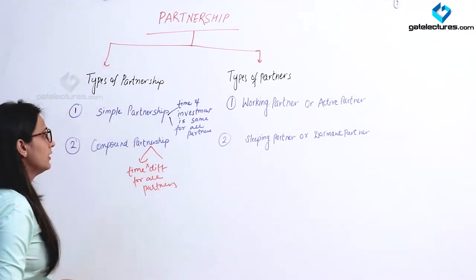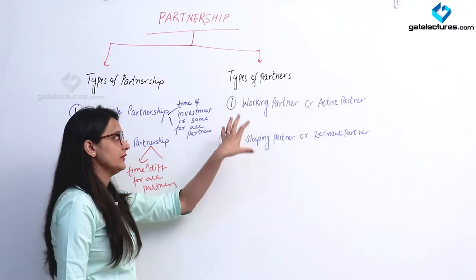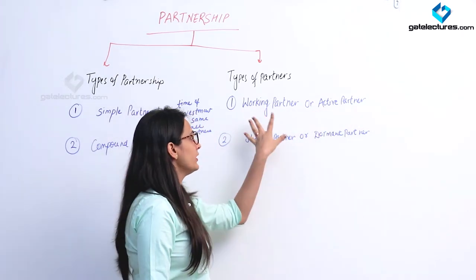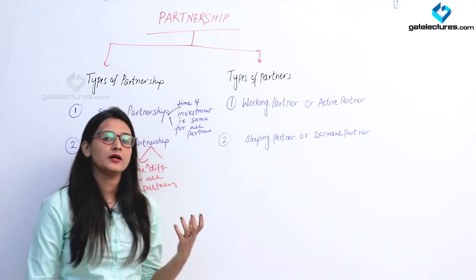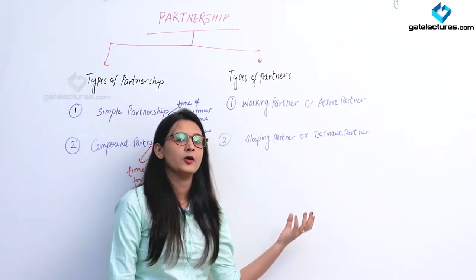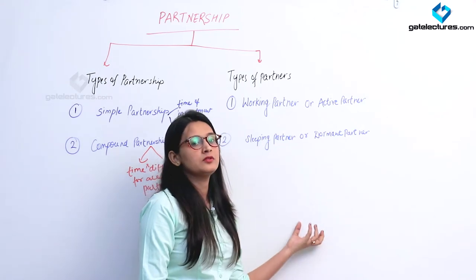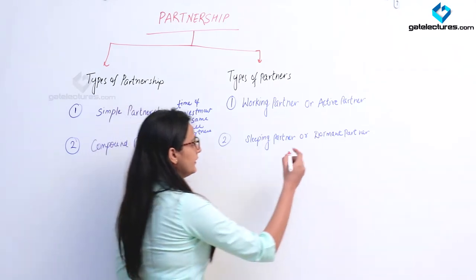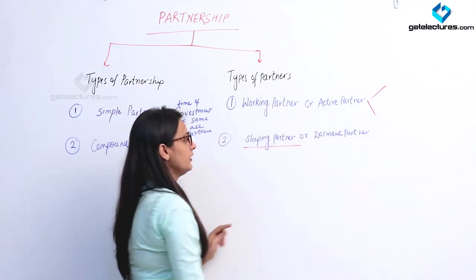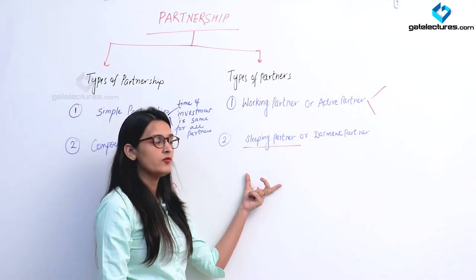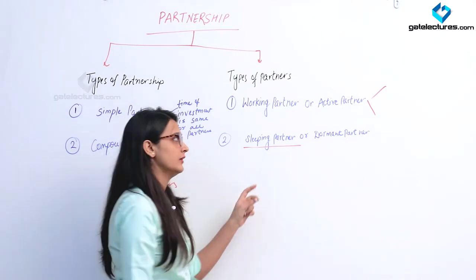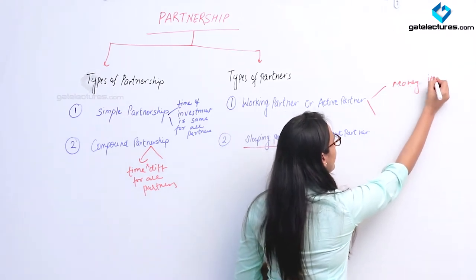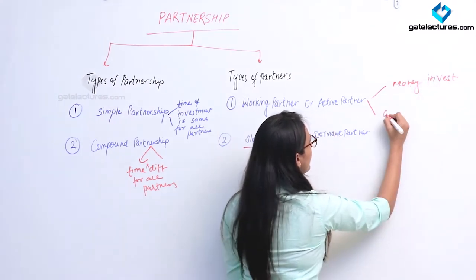Now we will discuss the types of partners. There are basically two types of partners: working partner (also called active partner) and sleeping partner. A working partner invests money in the organization and also manages the business affairs. A sleeping partner only invests money and does not participate in the affairs of the organization. The working partner invests money and also actively participates.